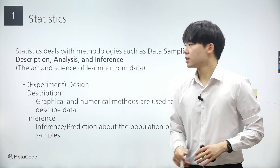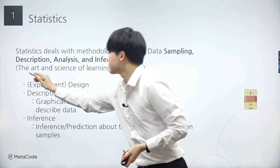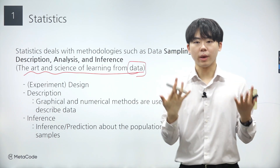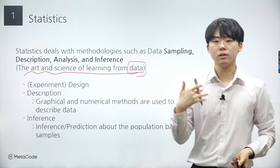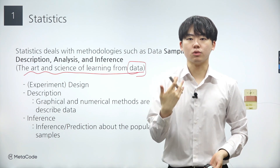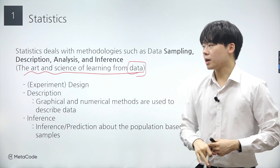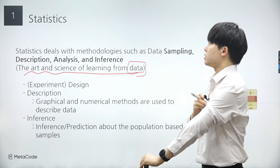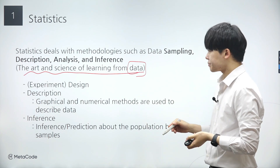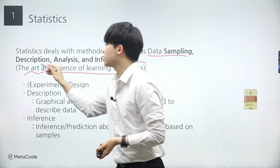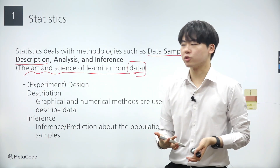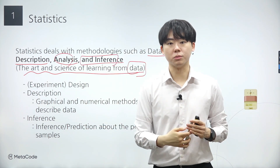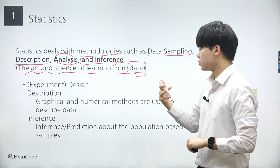To fully understand statistics, it's crucial to focus on the core concept that it is a discipline centered around dealing with data, specifically extracting insights and deriving conclusions from data. Statistics is a very comprehensive field of study covering almost every aspect of data. The field of statistics is broad, encompassing various categories such as data sampling, data description, data analysis, and lastly data inference, which entails making predictions or decisions based on data analysis.